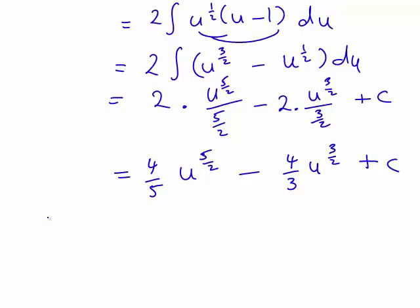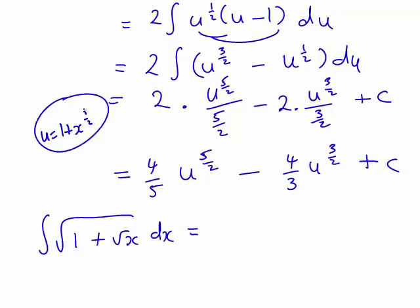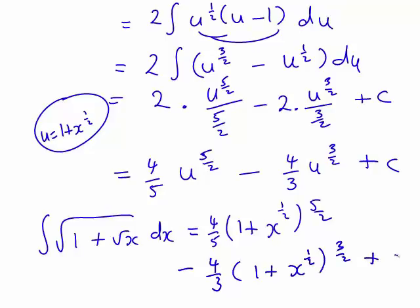So let's think back to what we started with. We were wanting to work out the integral of the square root of 1 plus the square root of x dx. We're just about there now. All we need to do is rewrite this in terms of x. And what was u? Well, u is actually equal to 1 plus x to the half. So this is simply going to become 4 fifths times (1 plus x to the half) to the 5 on 2, minus 4 thirds (1 plus x to the half) to the 3 on 2, plus c.